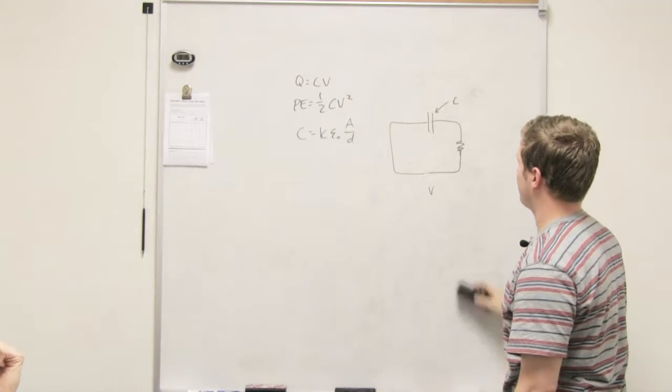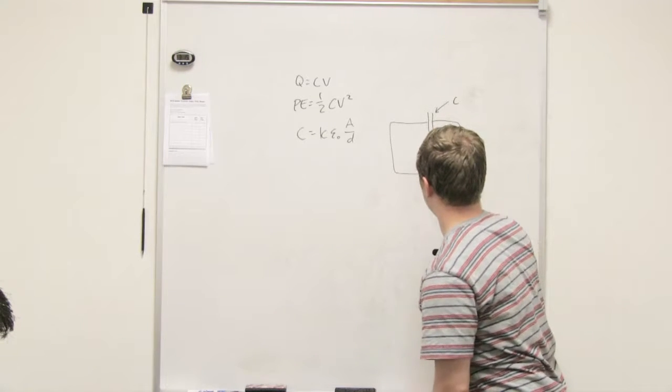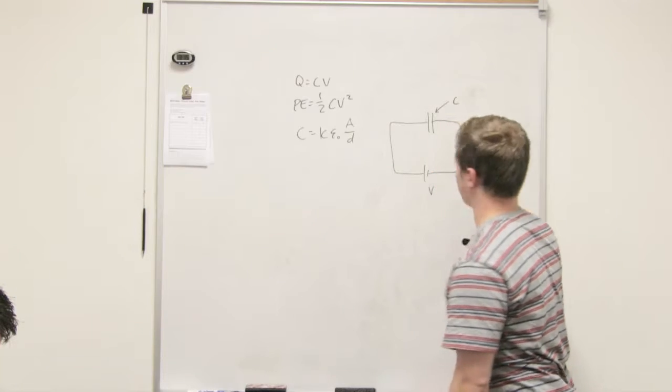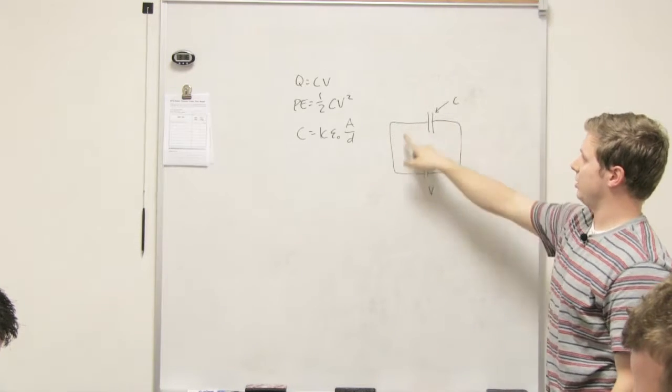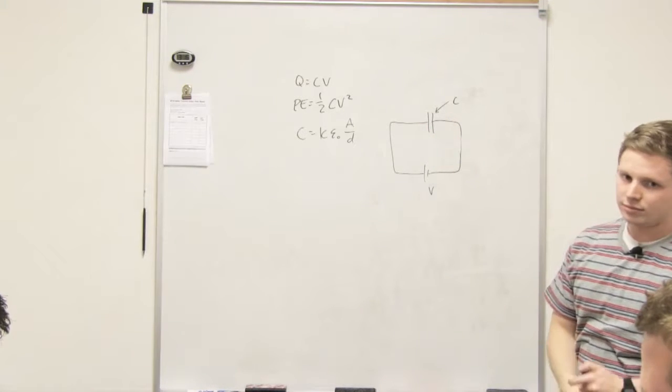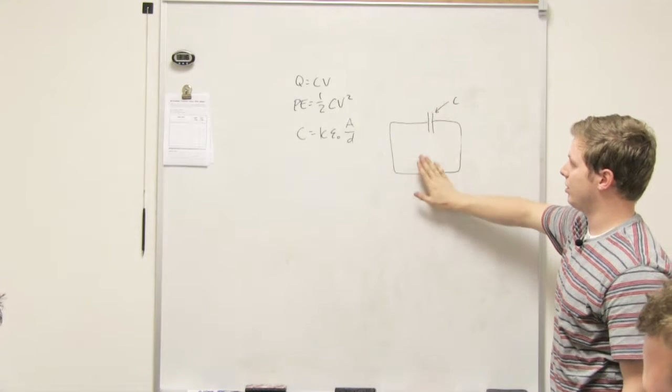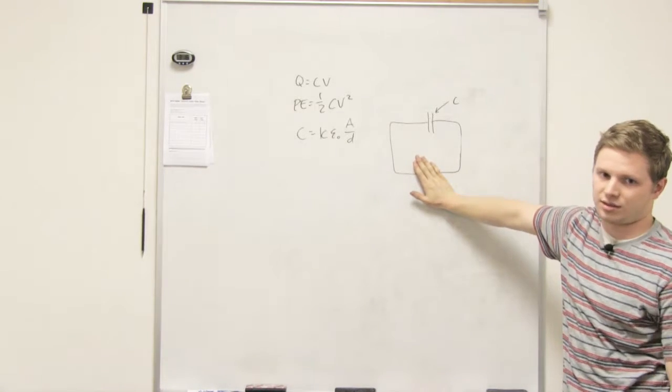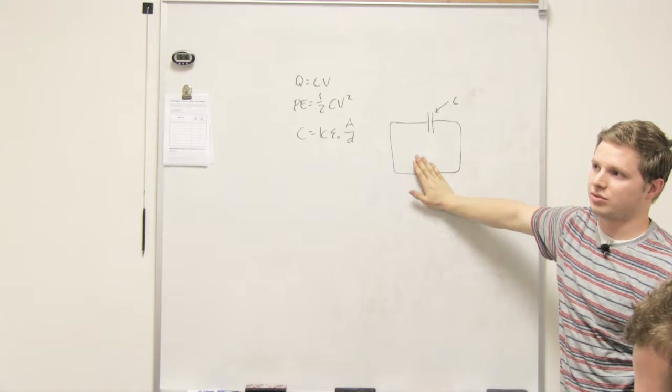So essentially what a capacitor does is it just stores charge on it that it gets from a voltage source essentially. So this voltage source runs through it and over time this thing will build a charge. And what does it do with that charge? Like, you know, if you take away the battery, like I said, it could keep the light bulb going or something like that. It just stores charge to use later.